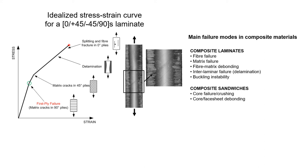After manufacturing, the material for wind turbine blades is tested by idealized stress-strain curve analysis. Different points on the graph define different properties of the material. The main failure modes in composite materials, especially for composite laminates, are fiber failure, matrix failure, fiber-matrix debonding, interlaminar failure or delamination, and buckling instability. The main failure modes in composite sandwiches are core failure or crushing and core-facesheet debonding.